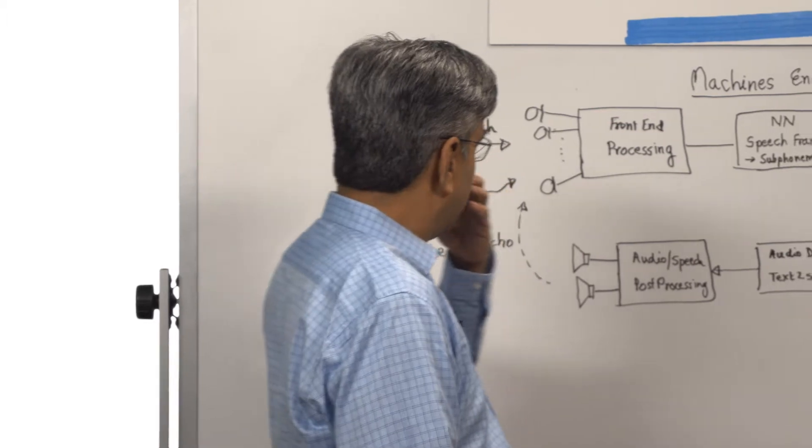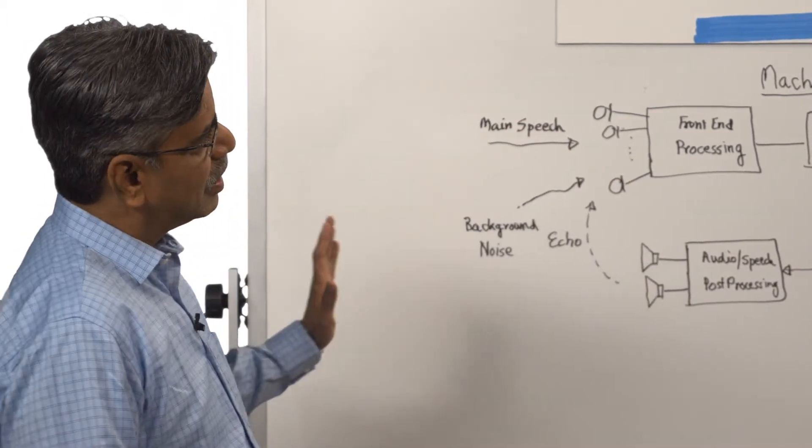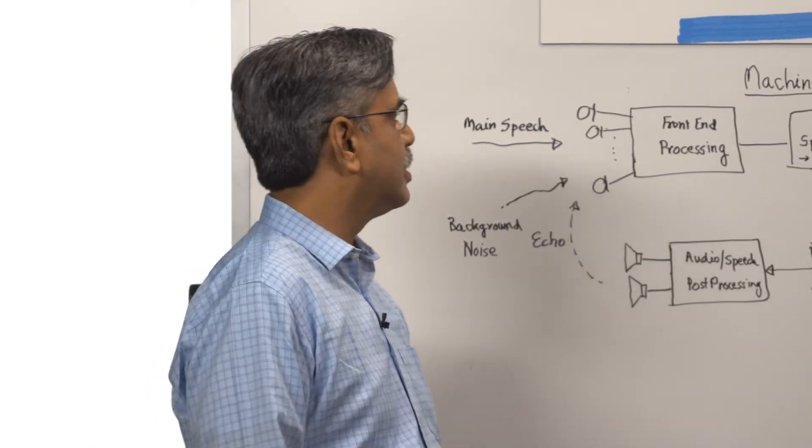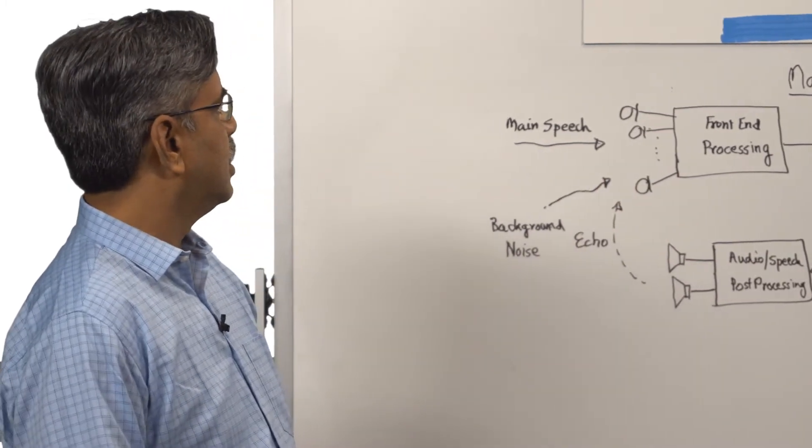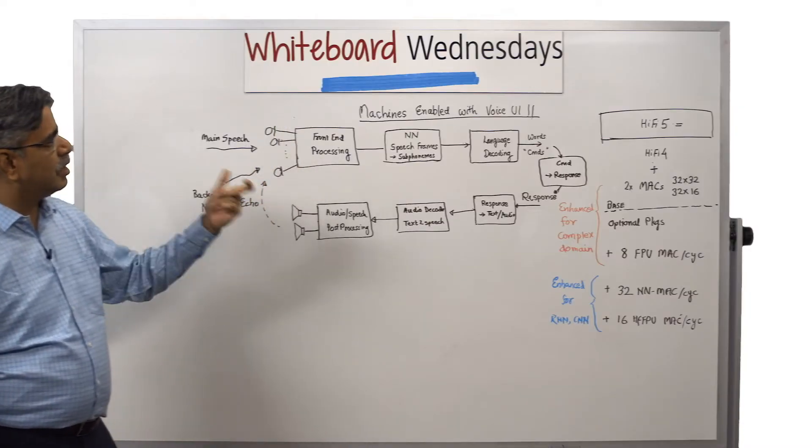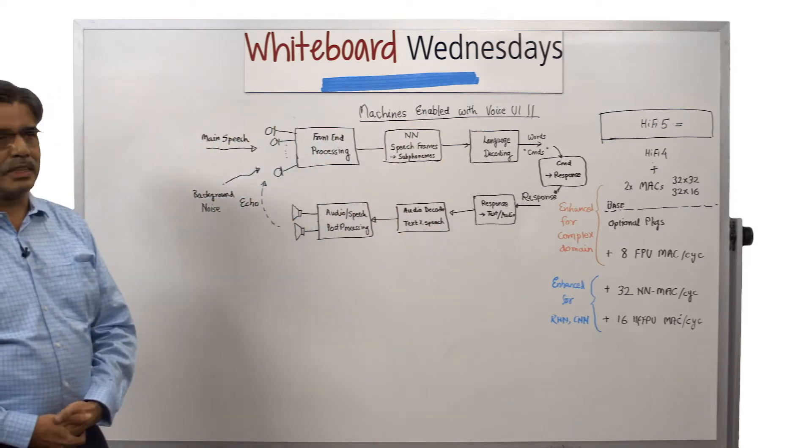I will go through the block diagram once so that you will understand why HiFi 5 is getting introduced in this particular domain. So if you go from this side, a machine which is enabled for voice UI will typically have this flow of signals.